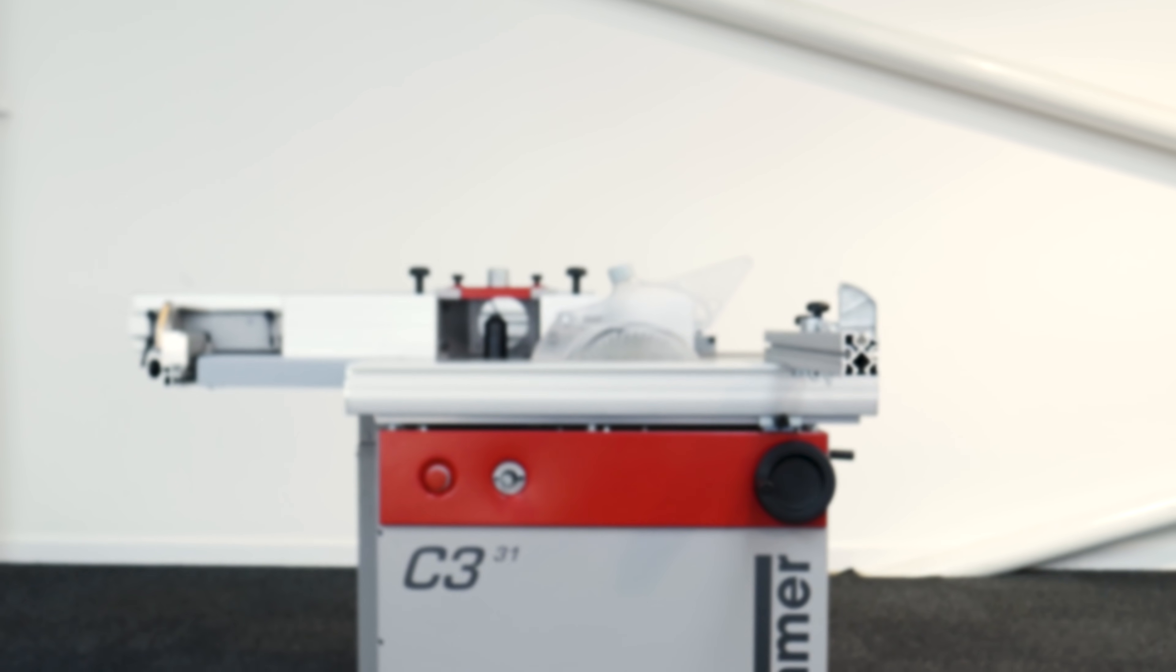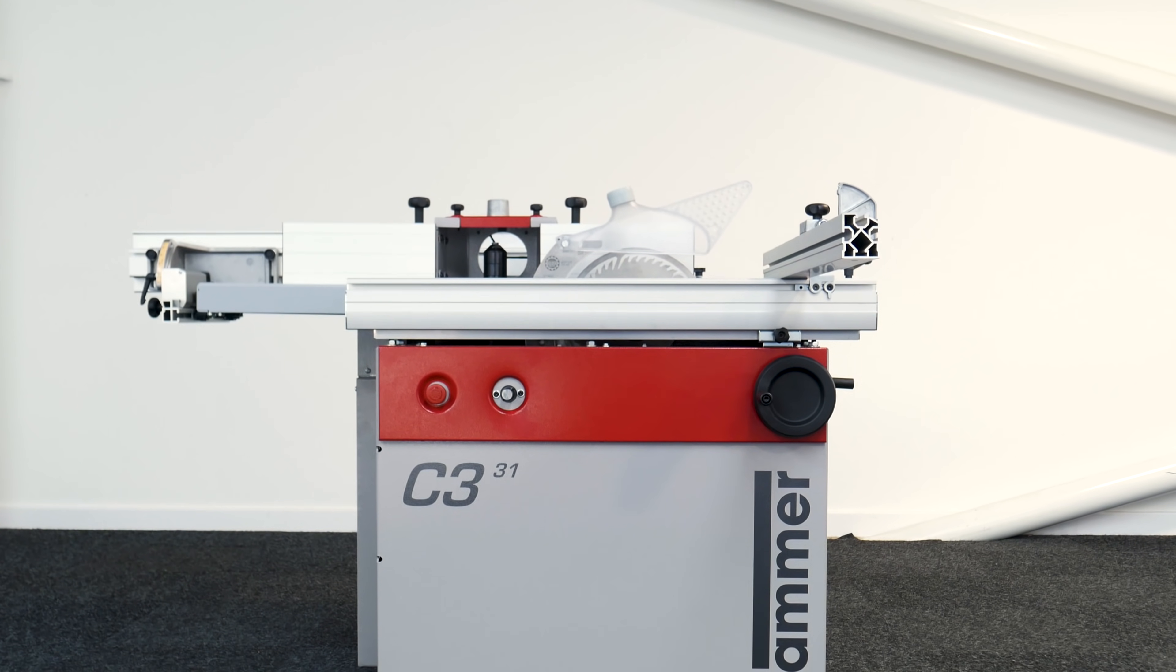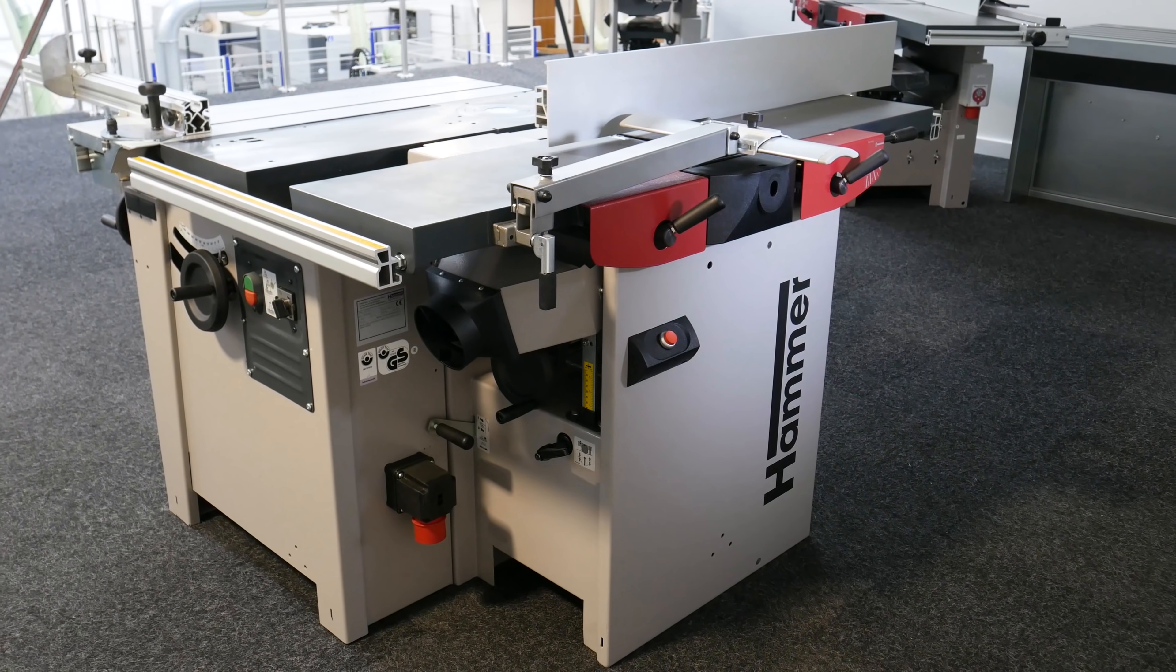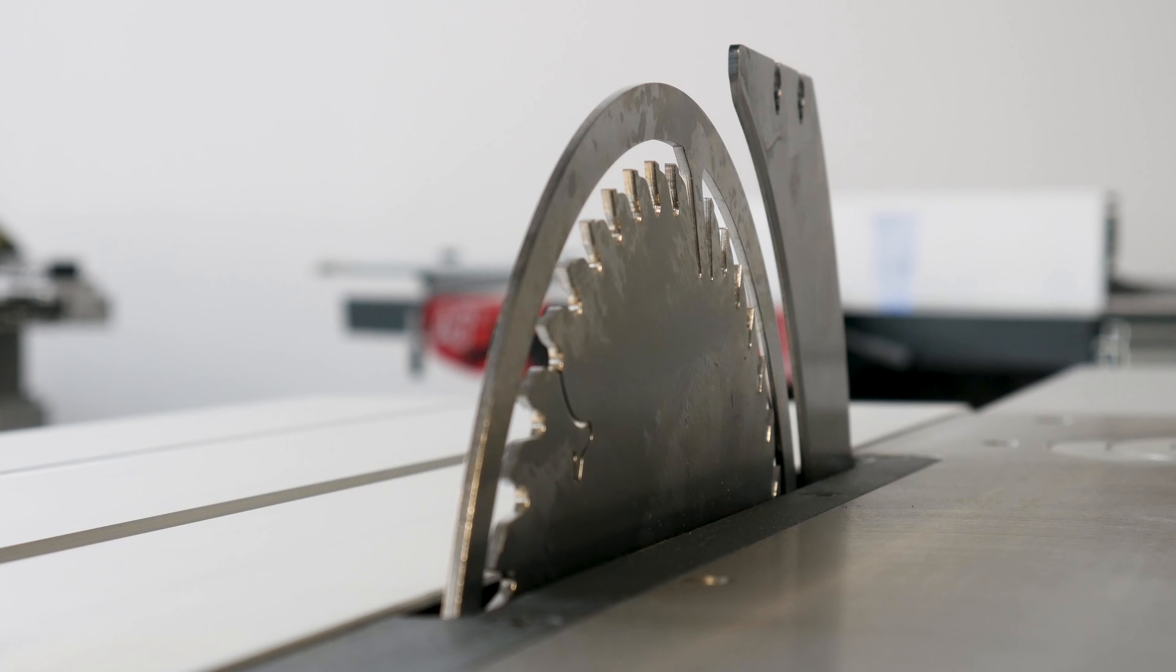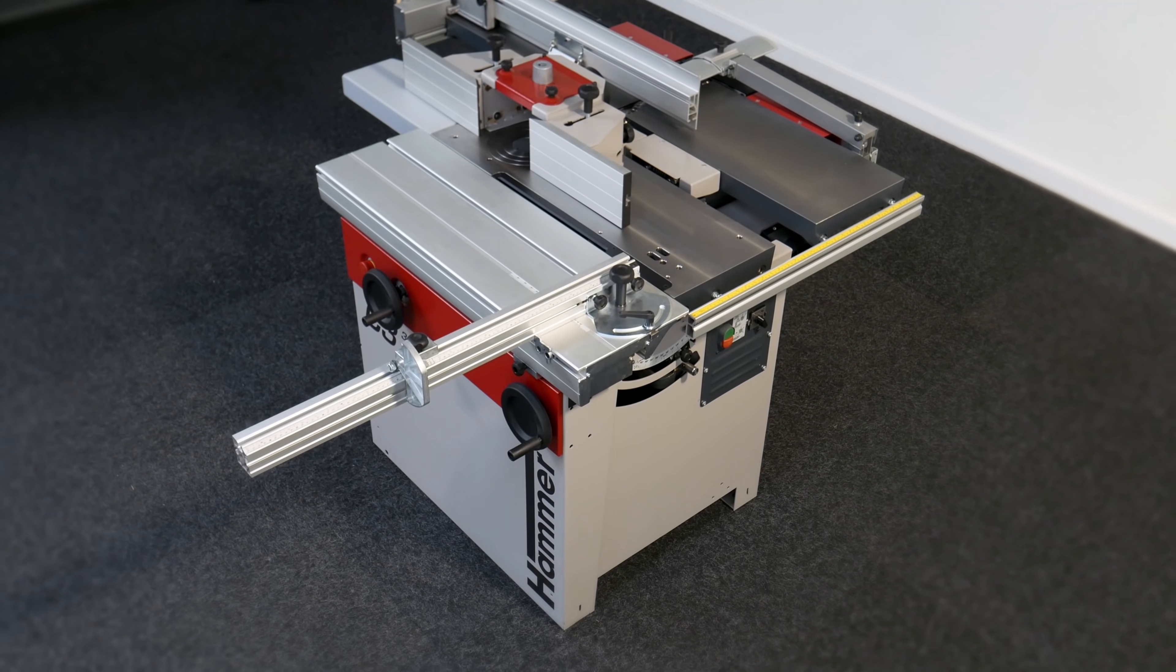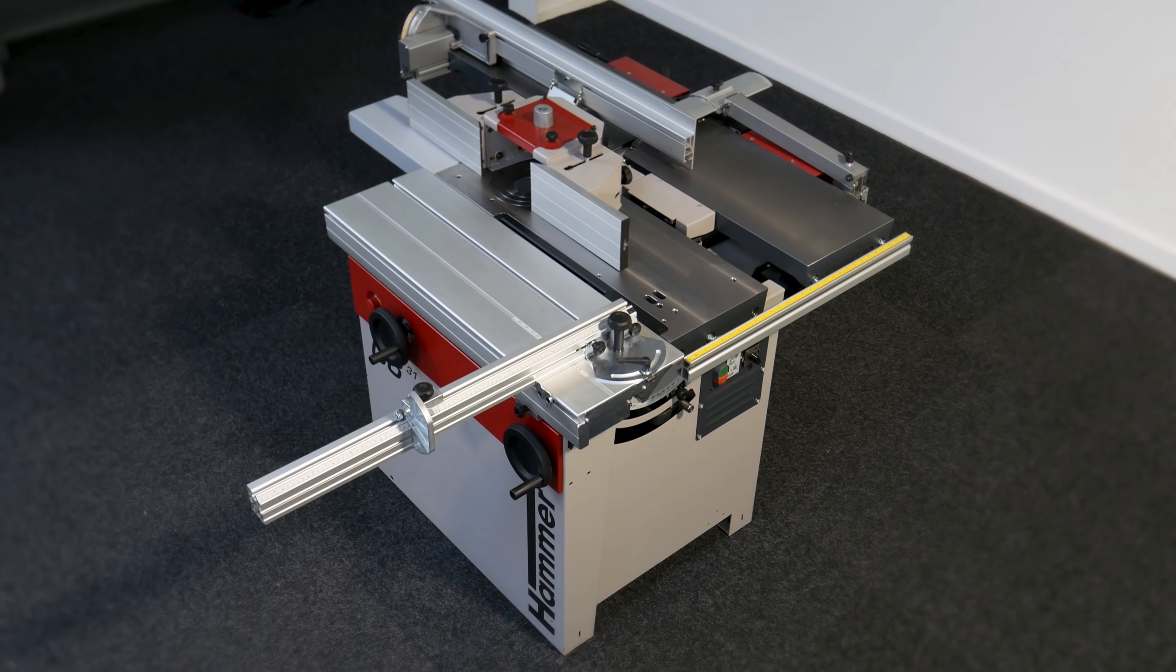The Hammer C331 is one of the most popular combination machines from the Felder Group, offering professional planing and thicknessing, moulding, sawing and, as an option, mortising, all with incredible precision and the smallest of space requirements.